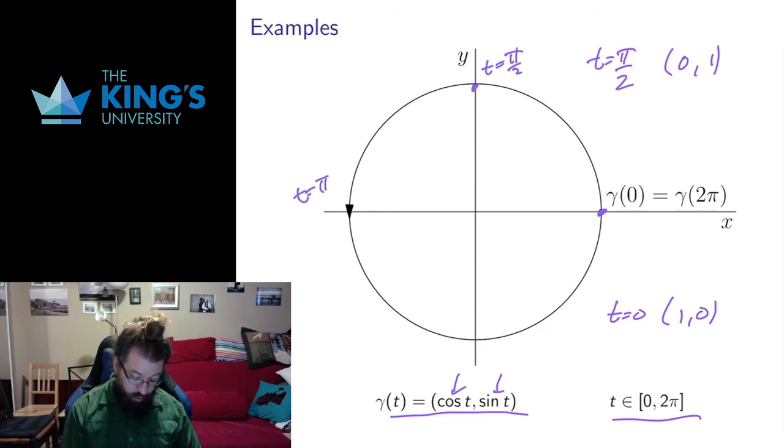When t is equal to π, I get -1, 0. When t is equal to 3π over 2, I get 0, -1. I'm down here, and you can see that I'm just moving along this circle as time increases.